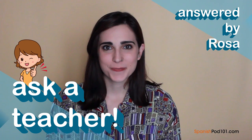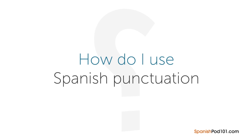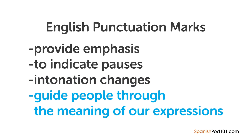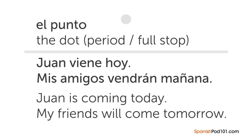Hi everybody, Rosa here. Welcome to Ask a Teacher, where I'll answer some of your most common Spanish questions. The question for this lesson is: how do I use Spanish punctuation? Just like in English, punctuation marks are used to provide emphasis, indicate pauses and intonation changes, and guide people through the meaning of expressions. The first one is 'el punto' — the period in American English or full stop in British English — used to mark the ending of a sentence. After using a punto, the next word should be capitalized.